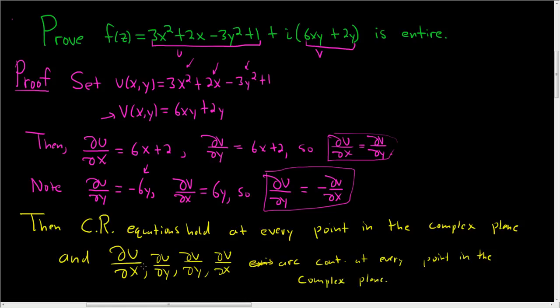So all of these guys are continuous at every single point, and the Cauchy-Riemann equations hold at every single point. So thus, f is differentiable everywhere. Therefore, f is entire. So that's how you prove a function is entire.